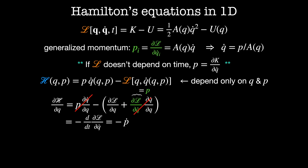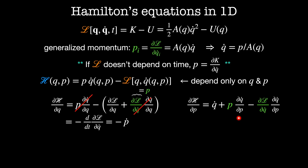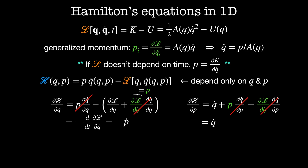So our first equation is dH by dQ is equal to minus P dot. Likewise, the rate of change of the Hamiltonian with respect to the generalized momentum is given by Q dot plus P times dQ dot by dP minus dL by dQ dot times dQ dot by dP. Since dL by dQ dot is equal to the generalized momentum, these two terms cancel out, and we're left with dH by dP is equal to Q dot.